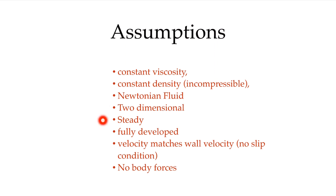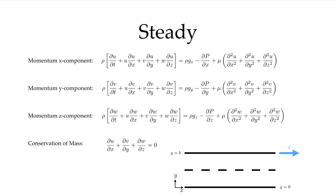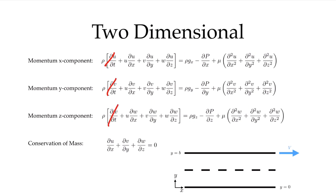It is a two-dimensional problem. We assume it's steady — there are no changes in time. It's fully developed, meaning the velocity is not changing in the flow direction or in the x direction. The velocity matches the wall velocity — the no-slip condition is enforced — and we're going to neglect any body forces. Steady flow enables us to cancel out all of the time derivatives. The fact that it's two-dimensional means we can cancel out all variation with respect to z, which eliminates the entire z-momentum equation and z-variations.